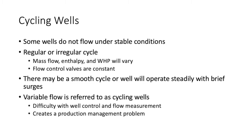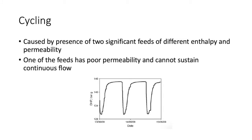Some wells do not flow under stable conditions. They may have a regular or irregular cycle in which mass flow, enthalpy, and wellhead pressure vary periodically while flow control valves remain at a constant setting. They may cycle smoothly and rhythmically, or regular flow may be interrupted by surges of pressure and water. This cycling behavior creates difficulty with well control, flow measurement, and production management. Cycling is caused by the presence of two significant feeds of different enthalpy and permeability, where one feed has low permeability and cannot sustain continuous flow.